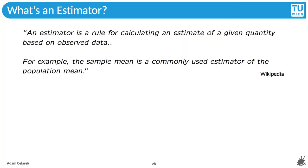But what's an estimator precisely? Clearly it's estimating something. According to Wikipedia, an estimator is a rule for calculating an estimate of a given quantity based on observed data. For example, the sample mean is a commonly used estimator of the population mean. The rectangle rule we saw before is also an estimator.